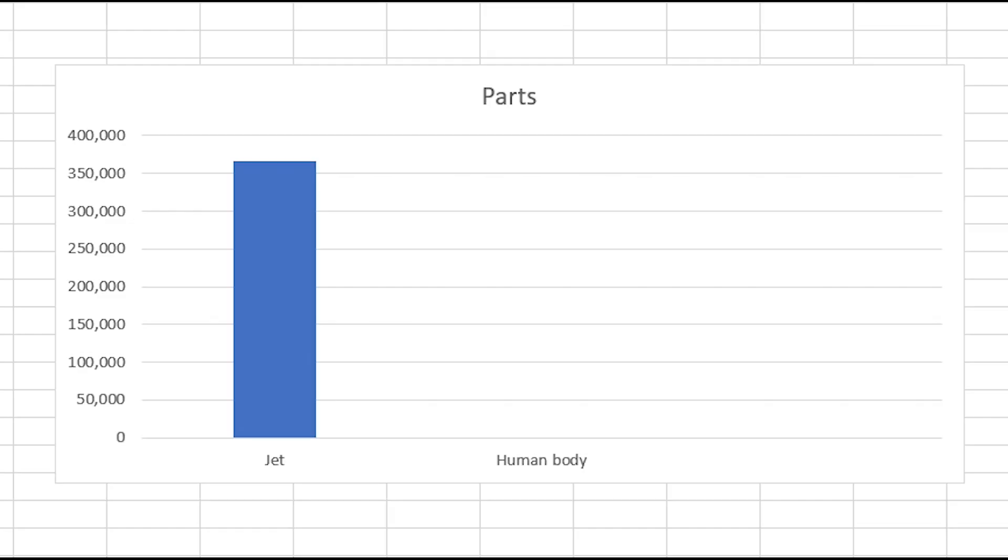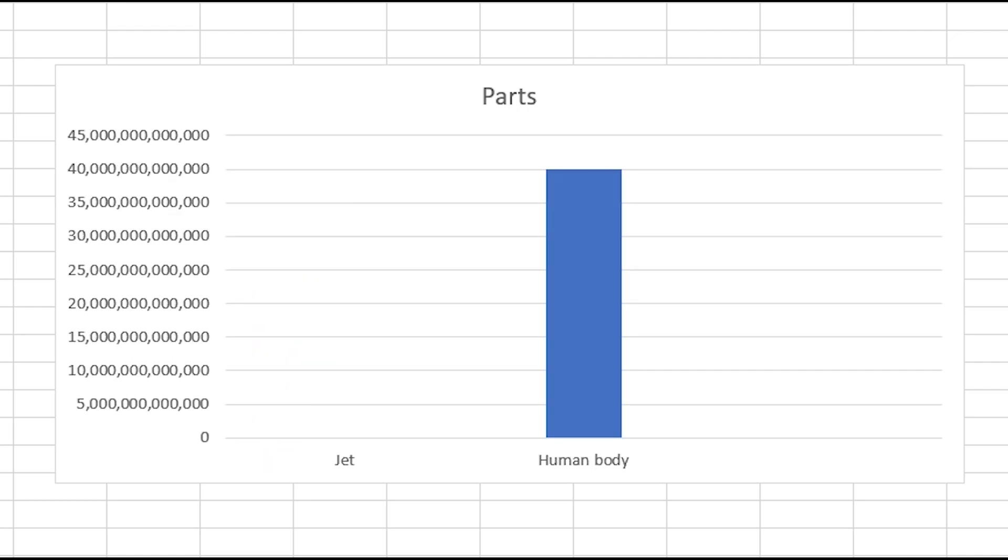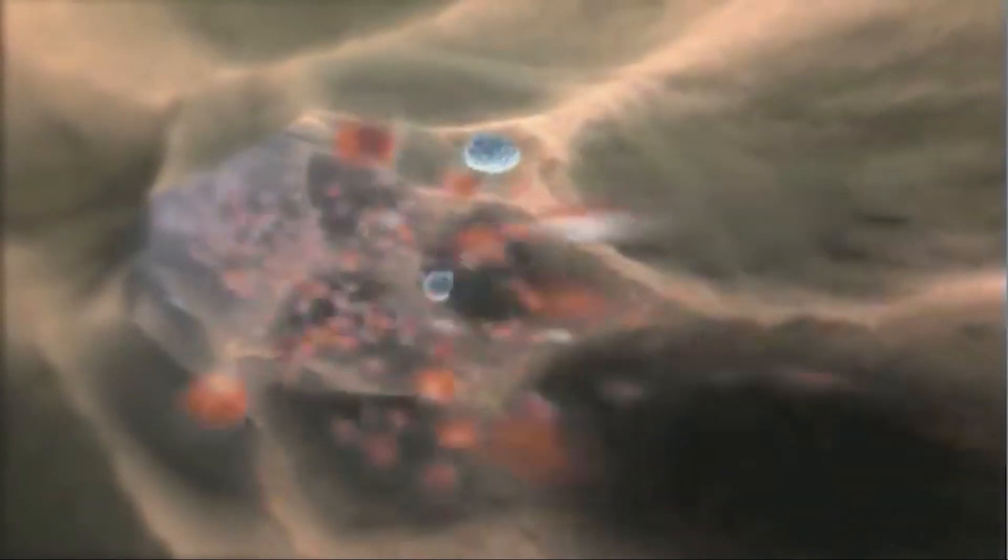But the human body has 40 trillion cells, and each of these cells has its own molecular inventory of metabolites, proteins, lipids, you name it.